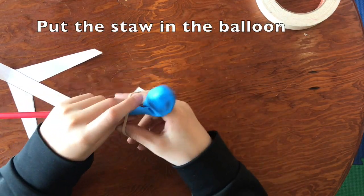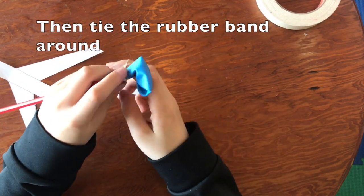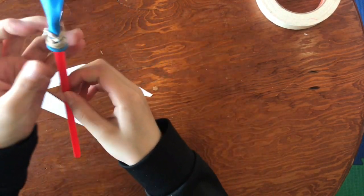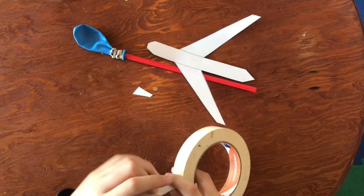First, put the straw in the balloon and then tie the rubber band around the balloon. The balloon has to be tied onto the straw.